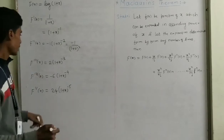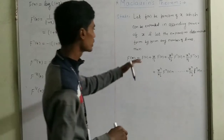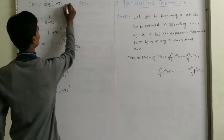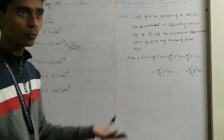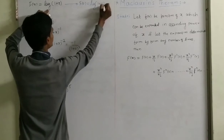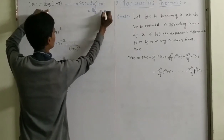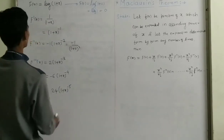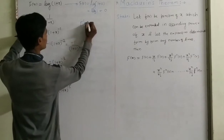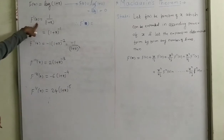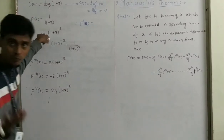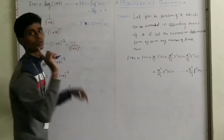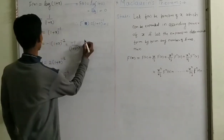So we can also write these as: minus 6/(1+x)⁴ and so on. Now we want to find out these derivatives at x = 0. So f(0): putting x = 0 gives log(1+0) = log 1, and log 1 = 0, because log 10 is 1. Now f'(0): putting x = 0 gives (1+0)^(-1), which is 1^(-1), which is 1.